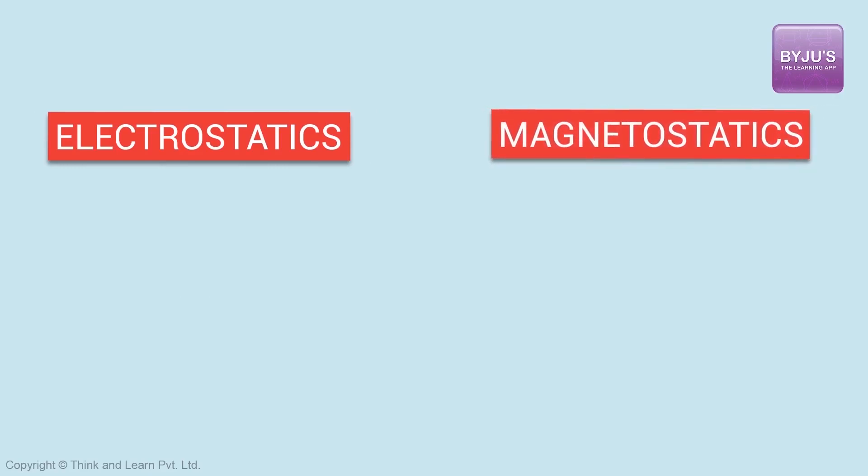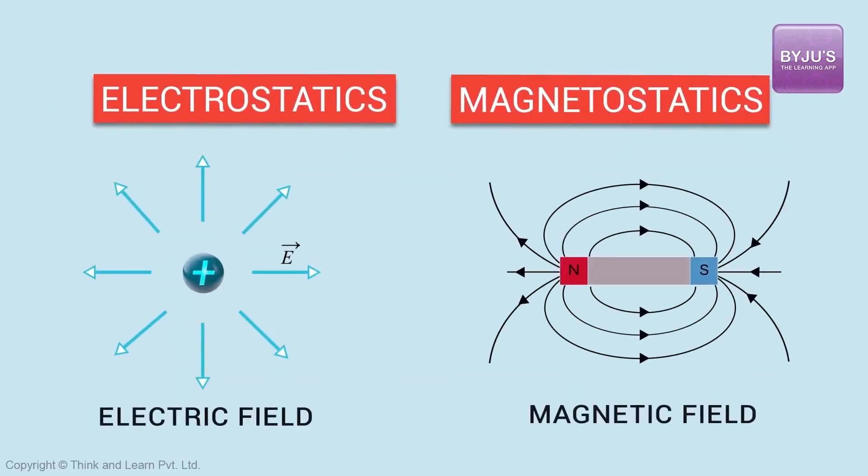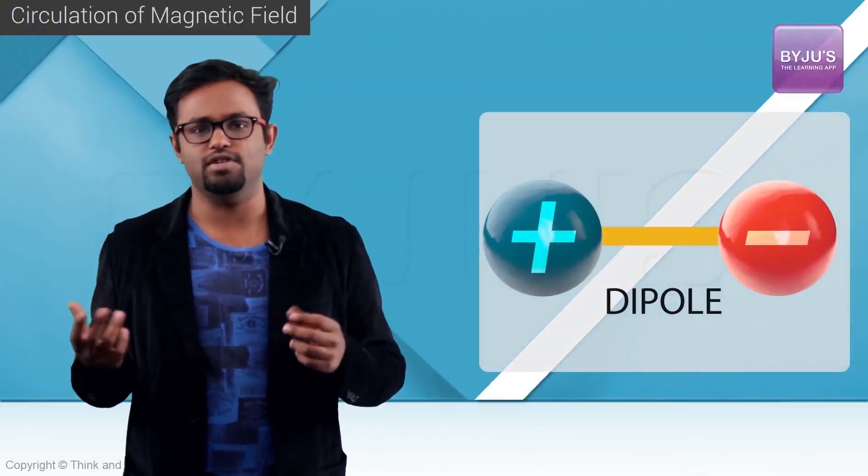One thing you must be observing is that there are similarities between our study of electrostatics and what we are doing here in magnetism. In electrostatics there was electric field; now we have magnetic field. In electrostatics we spoke about electric dipoles; here we have magnetic dipoles. There is another very strong similarity — so strong that you would see electrostatics is just a different version of magnetism, or vice versa. This is called Ampere's law. But before understanding Ampere's law, we have to understand something called the circulation of magnetic field.